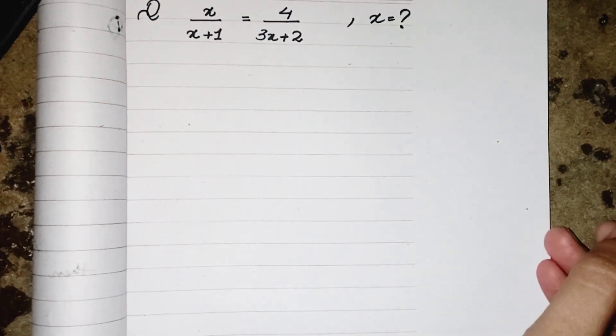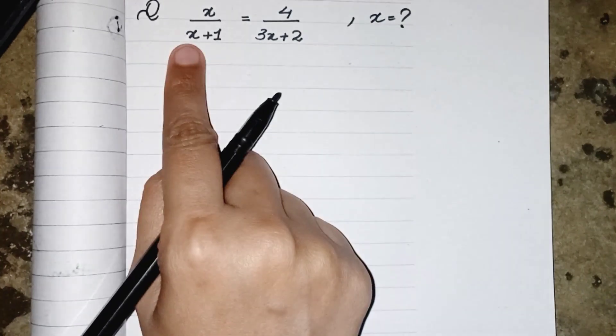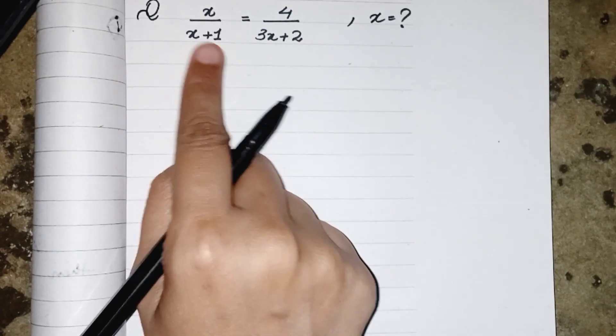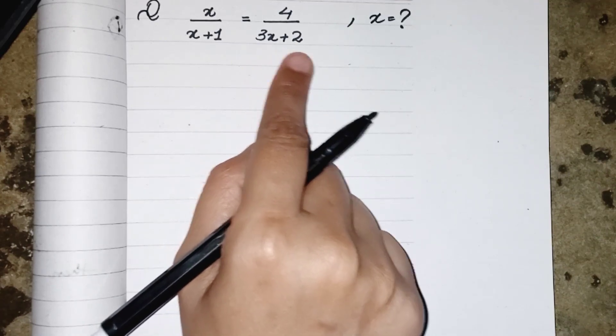Hello everyone, in today's video we have to find x where the equation is x/(x+1) = 4/(3x+2).